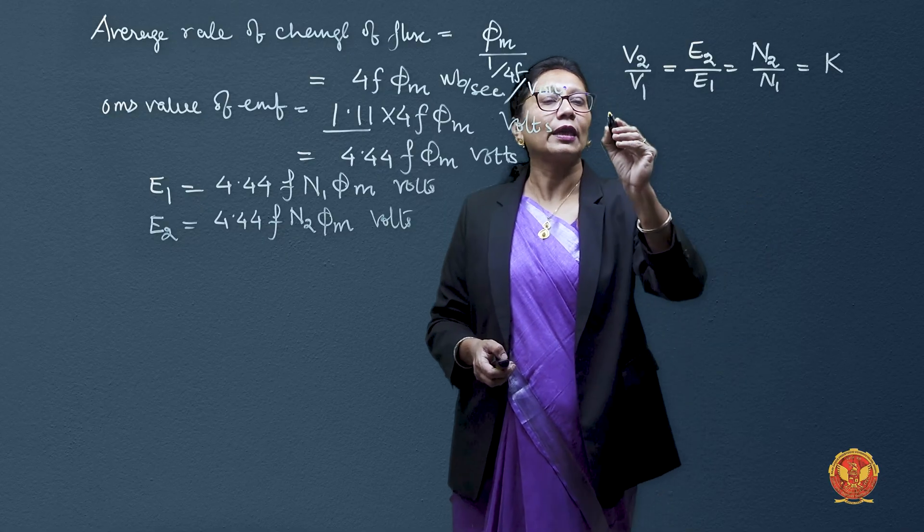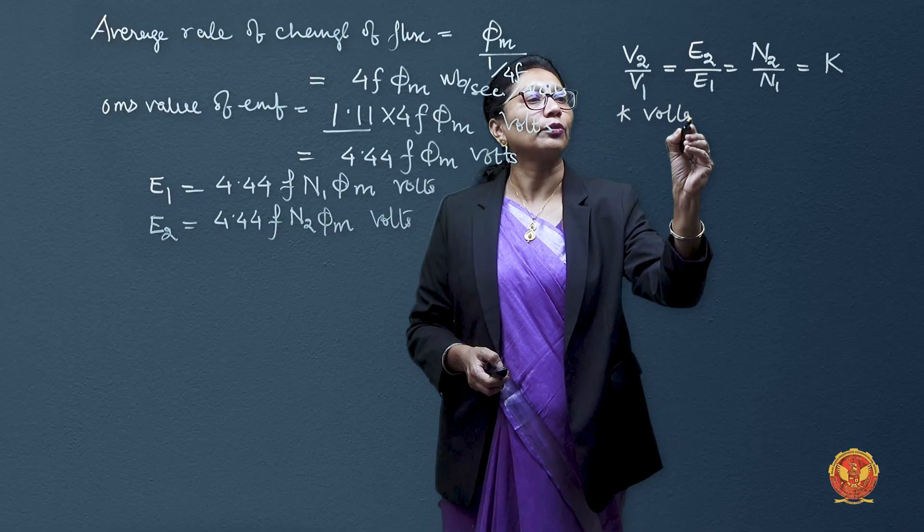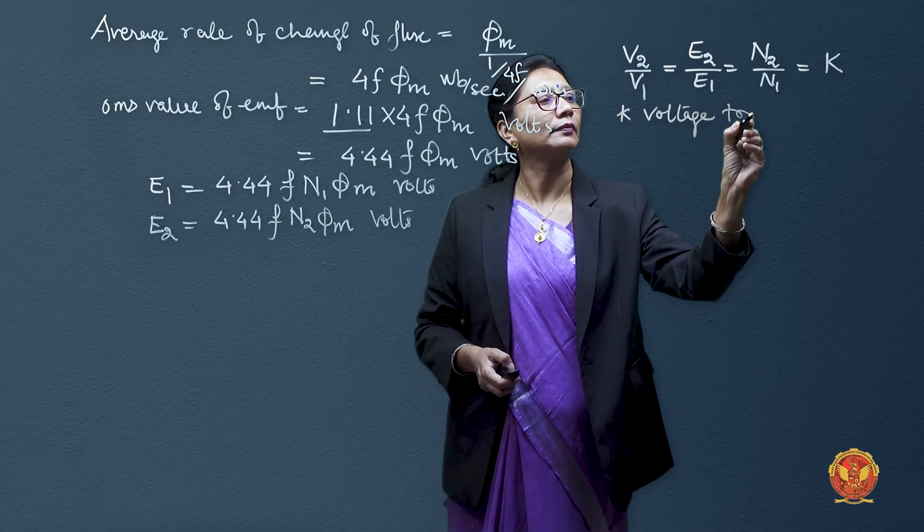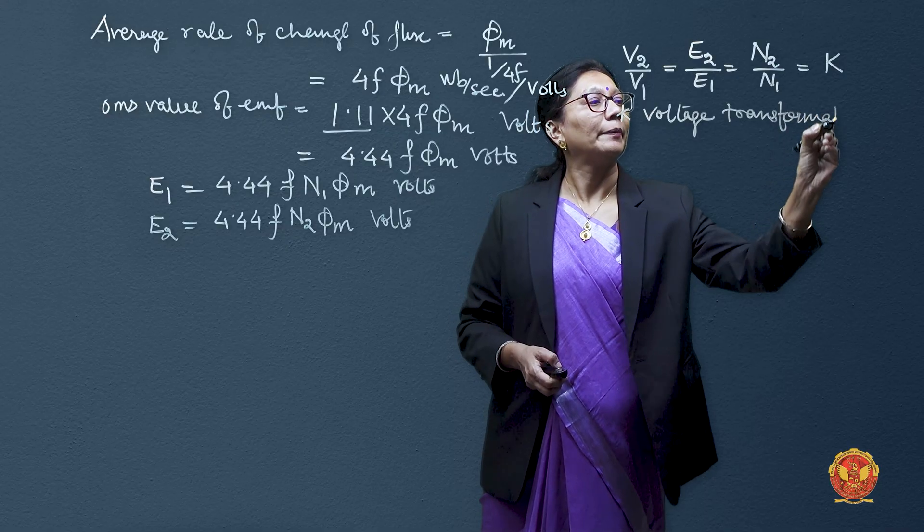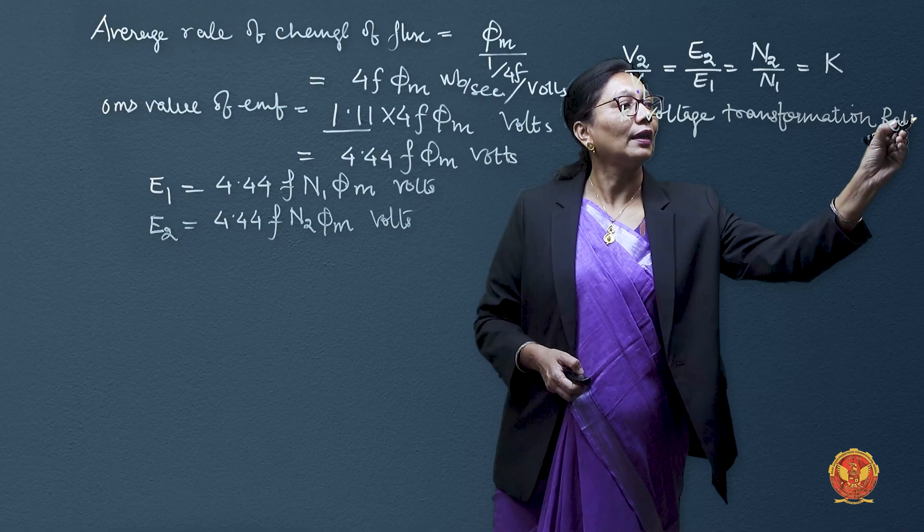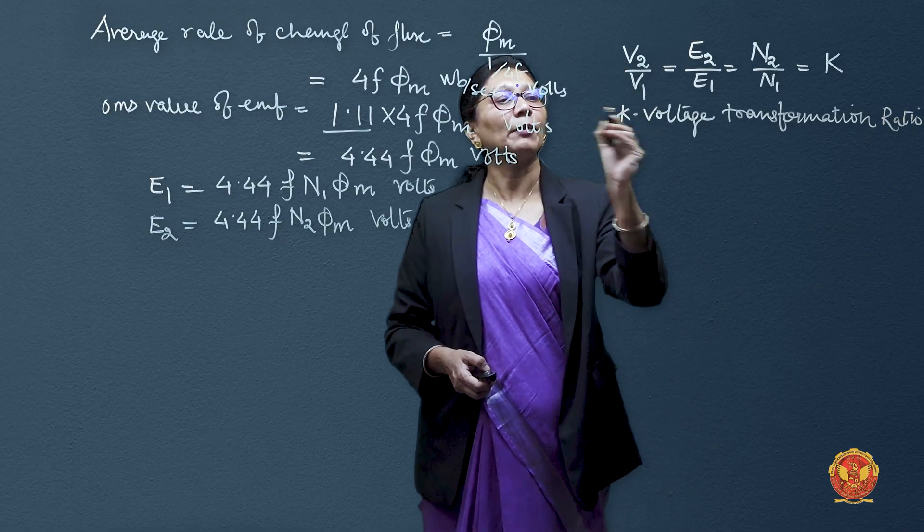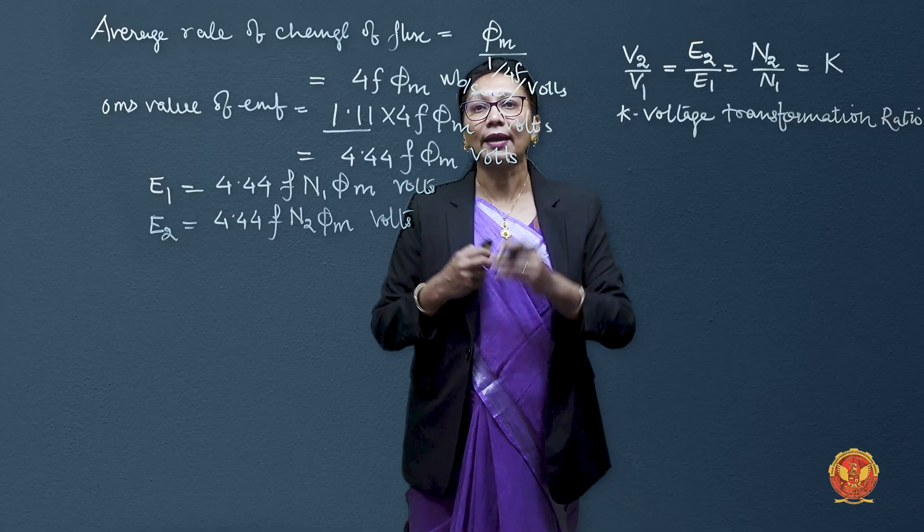This constant K is called the voltage transformation ratio, which gives us the relation between EMFs induced and the number of turns in primary and secondary winding.